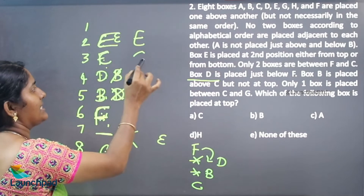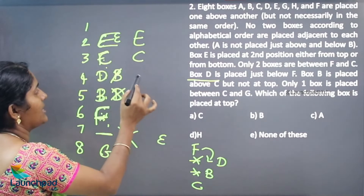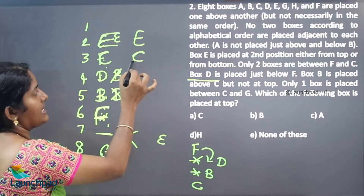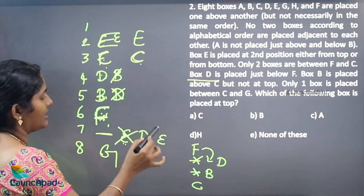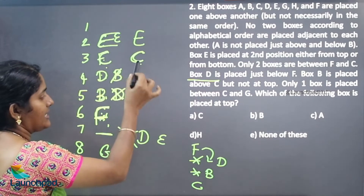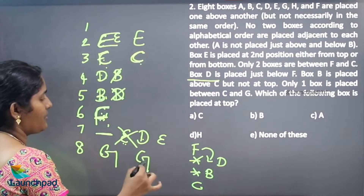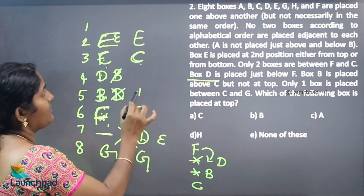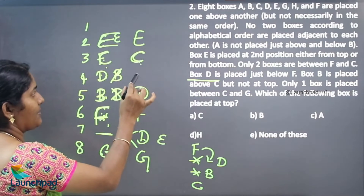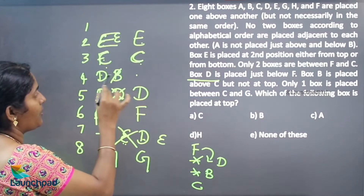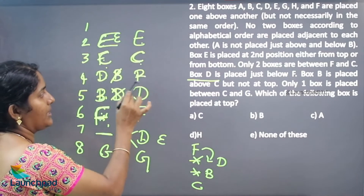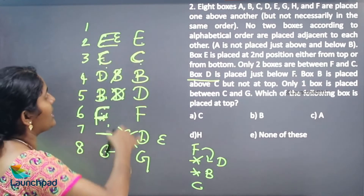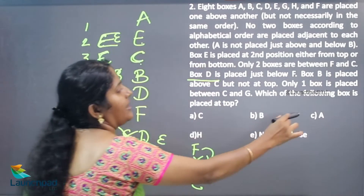E will be at the 2nd place. If I am placing C here, I need to place D here. C, D, G — and only one box is between G and F. F is here means D will come here, and E will be placed at the remaining position. One more box is B. Which of the following boxes is placed at the top? The one not placed elsewhere is A. Hence A is the correct answer.